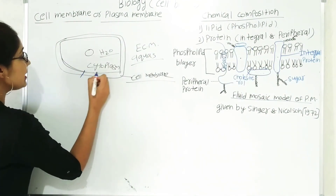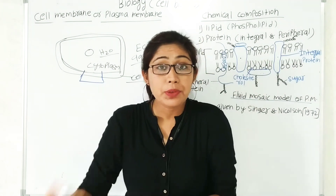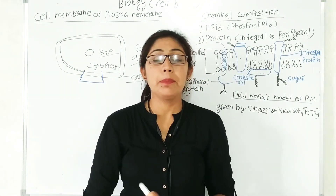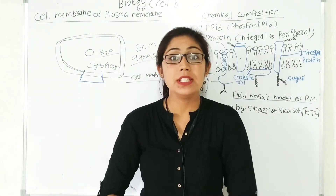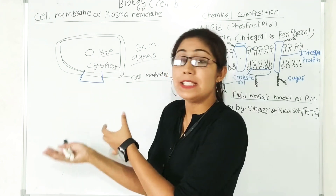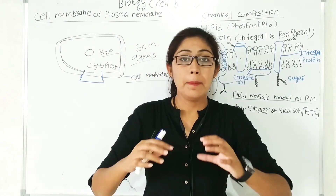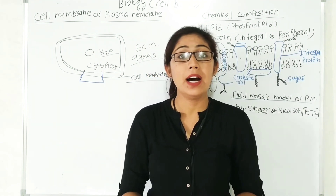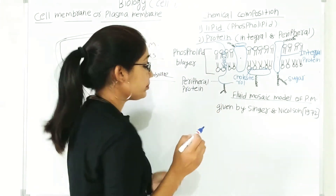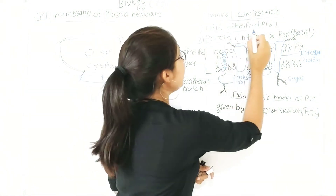We are going to look at a small portion of the plasma membrane in detail — about its chemical composition and its functions. The chemical composition means which type of biomolecule makes up the plasma membrane. The chemical composition of the plasma membrane is mainly made up of two different components: first, the lipid molecule, and second, the protein molecule. The type of lipid present in the plasma membrane is the phospholipid.